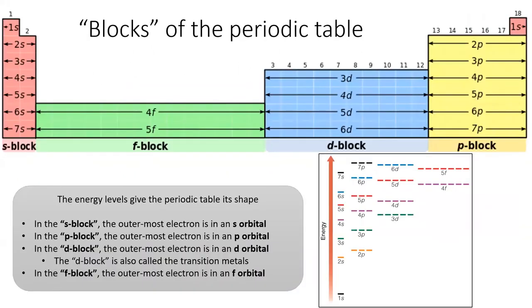In the next lesson, we'll continue to explore how the order of the energy levels gives the periodic table its characteristic shape, and why elements within the s block, f block, d block, and p block share many common properties.